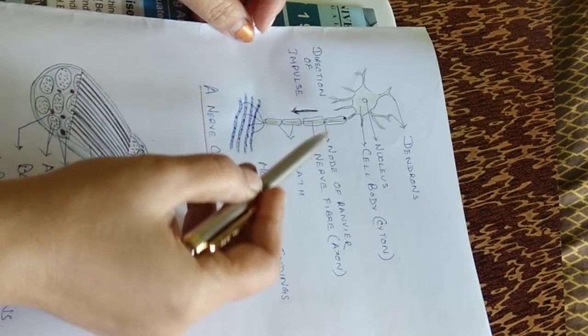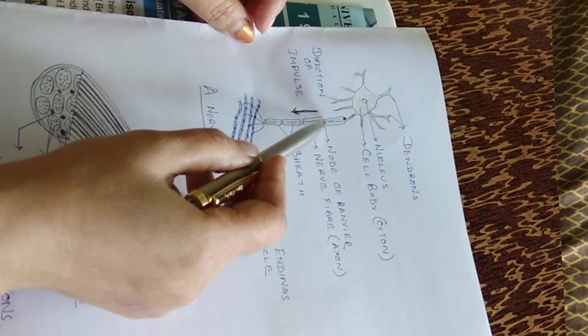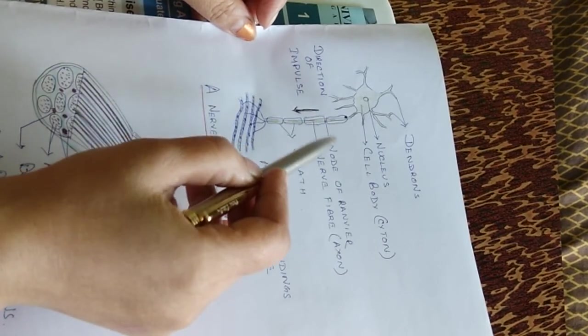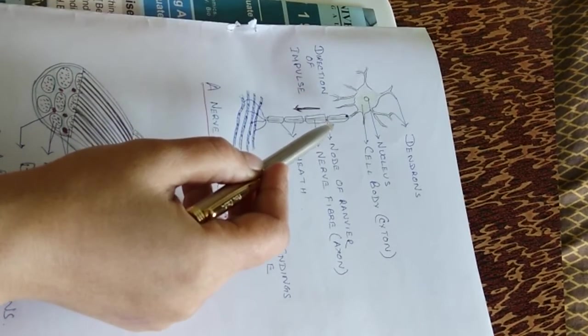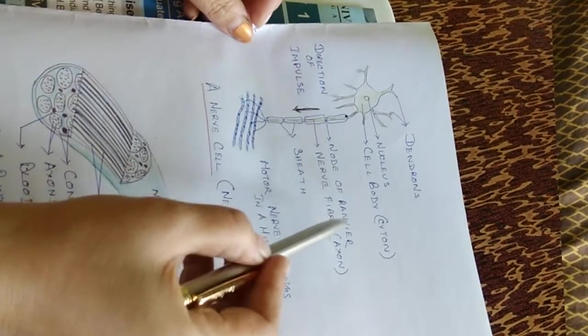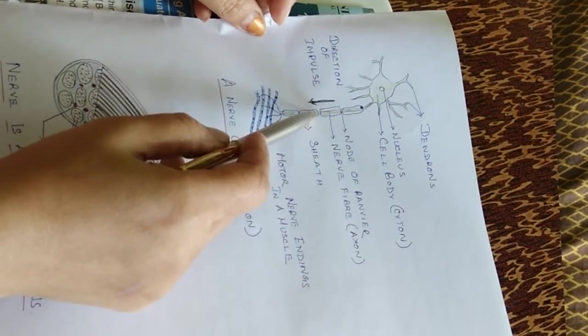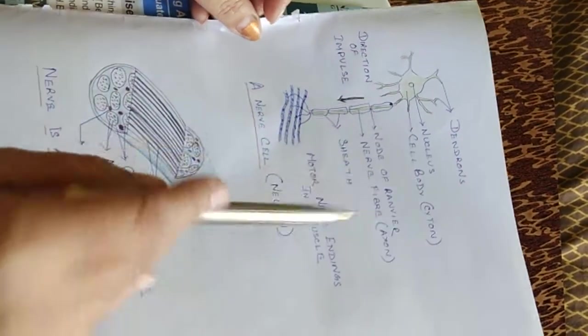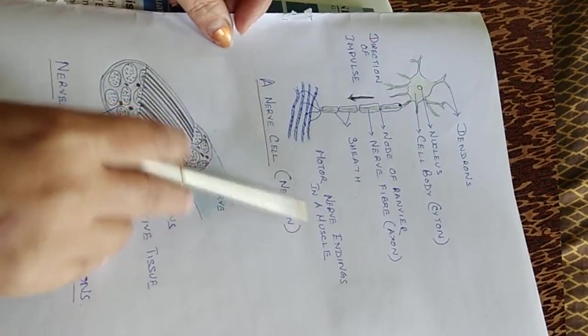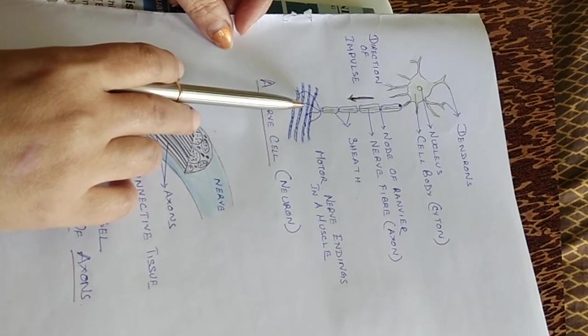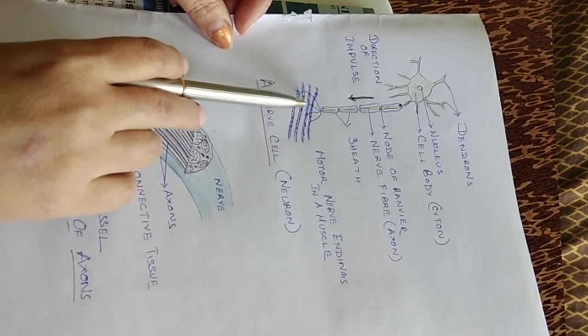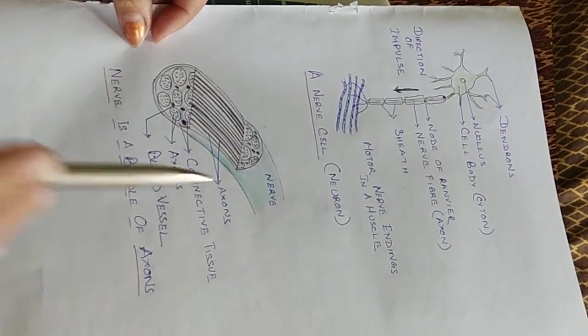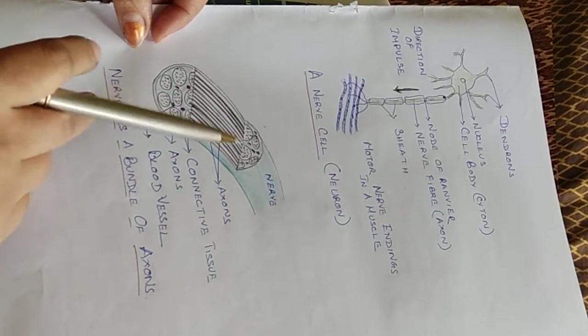This is the node of Ranvier. These are the myelin sheath. And the break, the myelin sheath break in between, the gap in between two myelin sheaths is known as node of Ranvier. This is the nerve fiber which is covered by the myelin sheath. The impulse travels in this way. This is a motor nerve ending in the muscle. This is the motor nerve, a picture of a motor nerve. And these end into the muscles. And these axons, they bundle together to form a nerve.